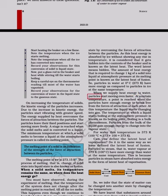When we supply heat energy to water, particles start moving even faster. At a certain temperature, a point is reached when the particles have enough energy to break free from the forces of attraction of each other. At this temperature the liquid starts changing into gas. The temperature at which a liquid starts boiling at the atmospheric pressure is known as its boiling point. Boiling is a bulk phenomenon. Particles from the bulk of the liquid gain enough energy to change into the vapor state. For water this temperature is 373K (100°C = 273 + 100 = 373K).